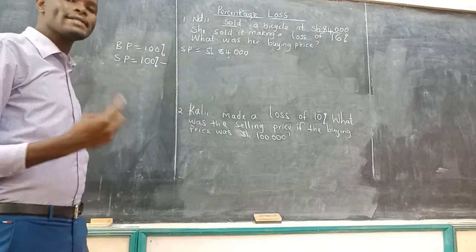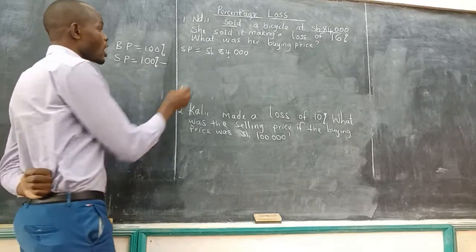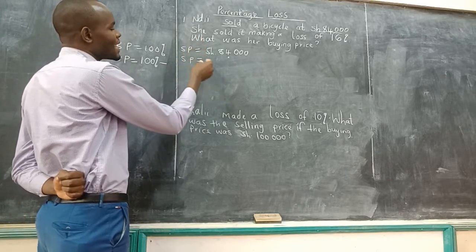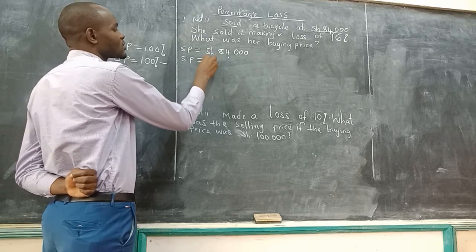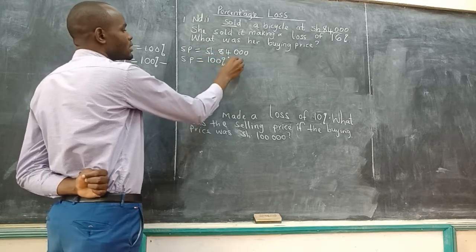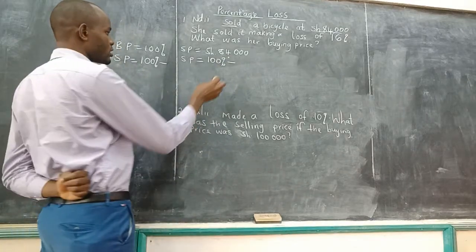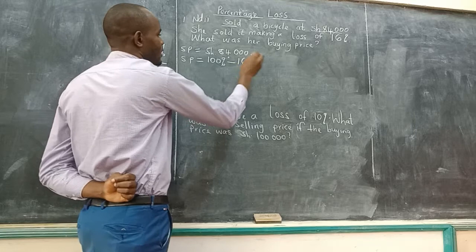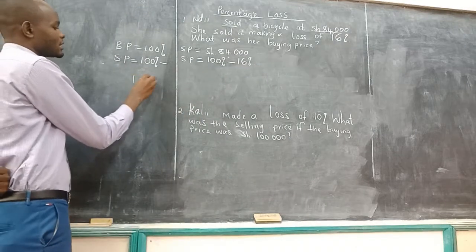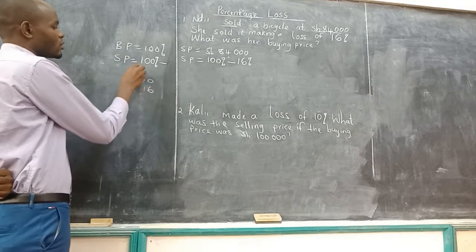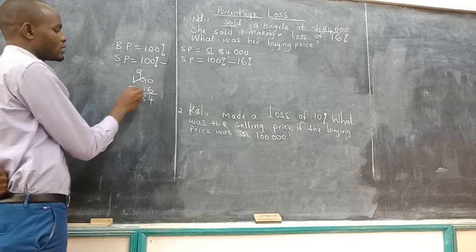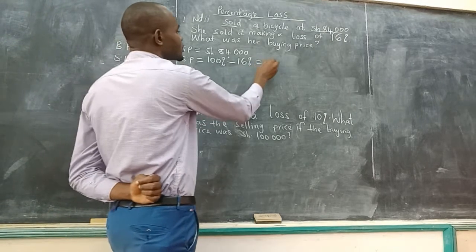What is our selling price in percentage? It means she sold less than 100%. So you say 100%, she made a loss, so you subtract 16%. 100 minus 16, you borrow here, you have 9, 10, that's 6, you have 4, 9, that's 1, you have 8. So that is 84%.